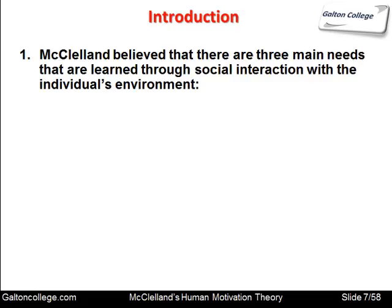McClellan believed that there are three main needs that are learned through social interaction with the individual's environment. We know that personality can be derived from nature or from nurture, according to psychology. If it's nature, it's a part of our genetic makeup. But if it's nurture, it's from our environment — it's what we learn, how we've been taught and influenced. According to McClellan's view, the three main needs that drive motivation come from social interaction, with the person linking to his or her environment.